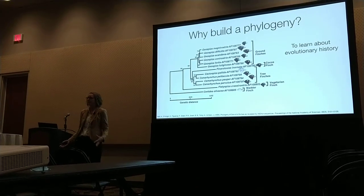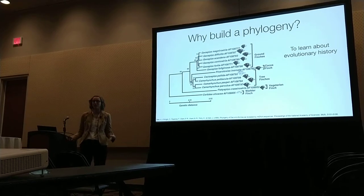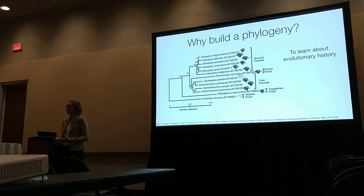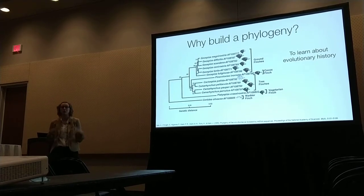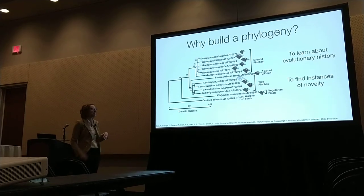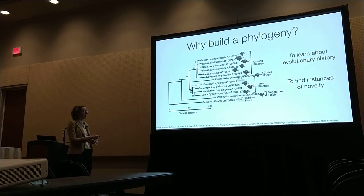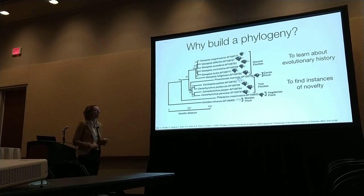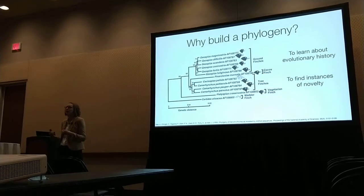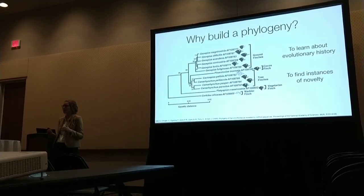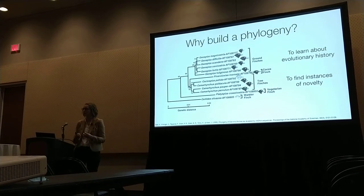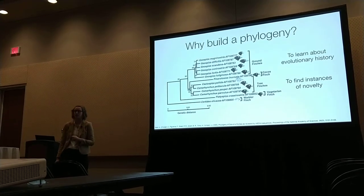I know I don't need to convince anybody in this room why we should want to build phylogenies, but just to recap: they are amazing tools for learning about evolutionary history, either of a group of organisms or a group of genes. We can also use them to find instances of novelty, like a light-colored finch in the middle of all these dark ones, or instances of convergence. And there are so many downstream analyses that having a really reliable core phylogeny can be really important.